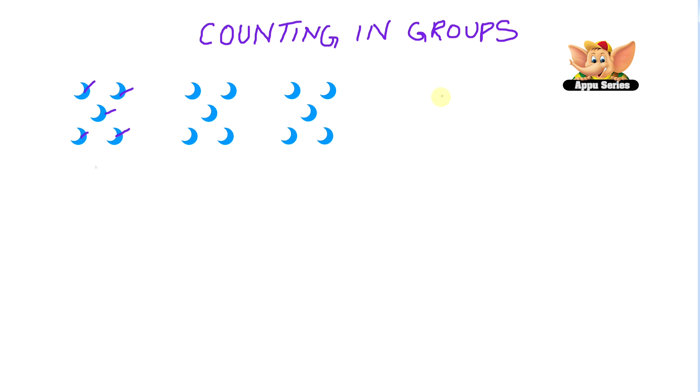So we have five plus five plus five equals fifteen. So we have fifteen moons. Therefore it is less than eighteen.